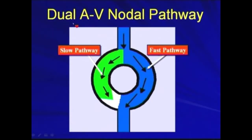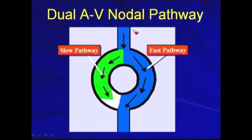In AVNRT, the existence of a dual AVNRT pathway is present. There is a fast pathway, and there also exists a slow pathway.